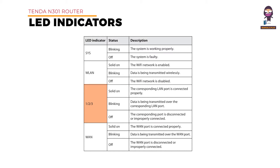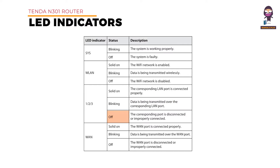LAN 1/2/3. Solid on status: the corresponding LAN port is connected properly. Blinking status: data is being transmitted over the corresponding LAN port. Off status: the corresponding port is disconnected or improperly connected.